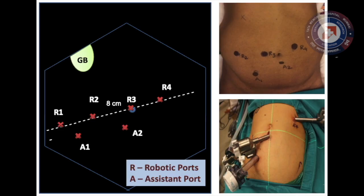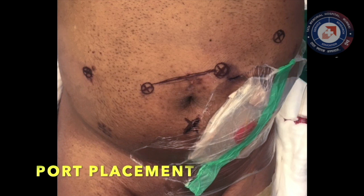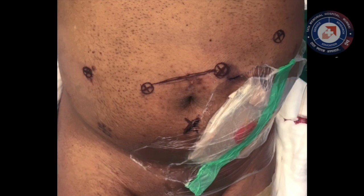We have standardized our port placement as shown in the diagram, with 4 robotic and 2 assistant ports — bipolar and camera through R1 and R2 respectively.